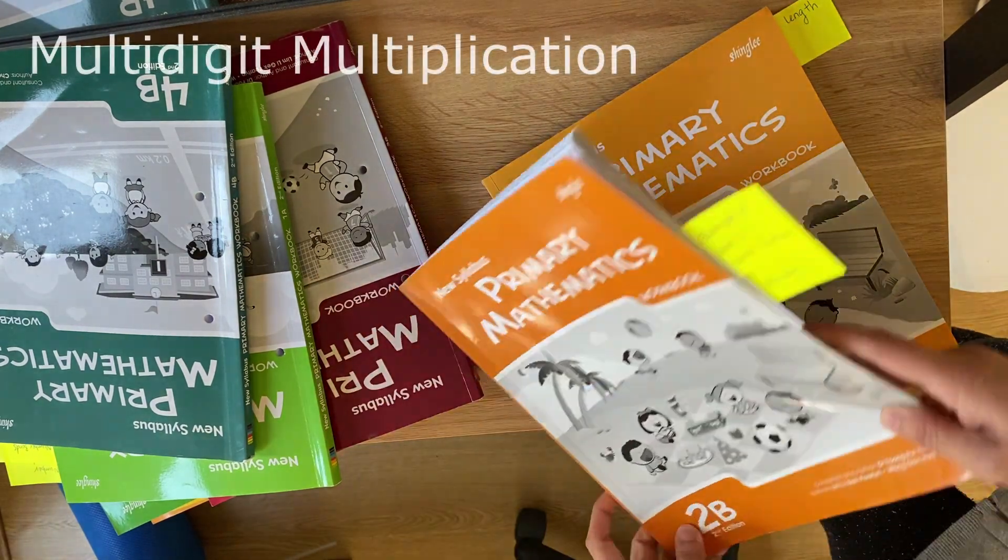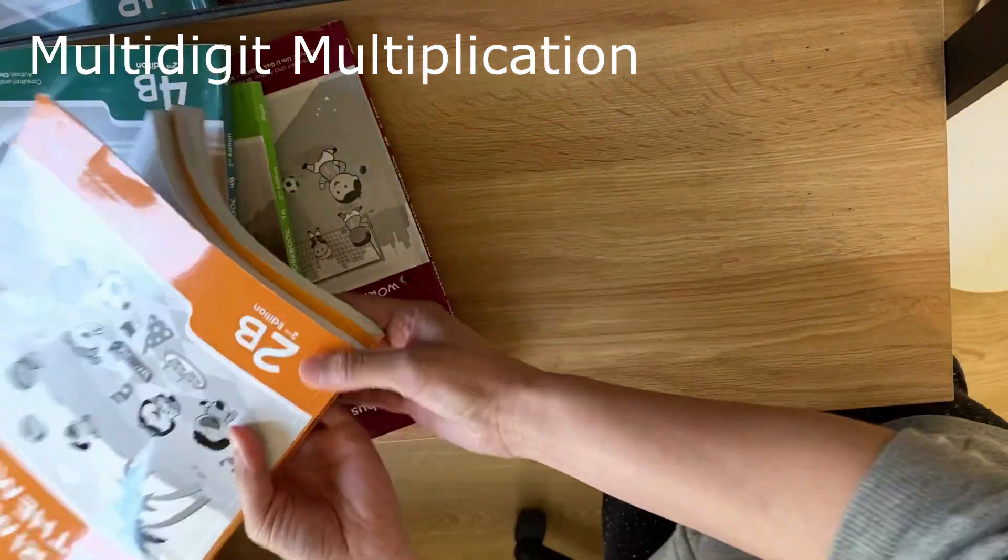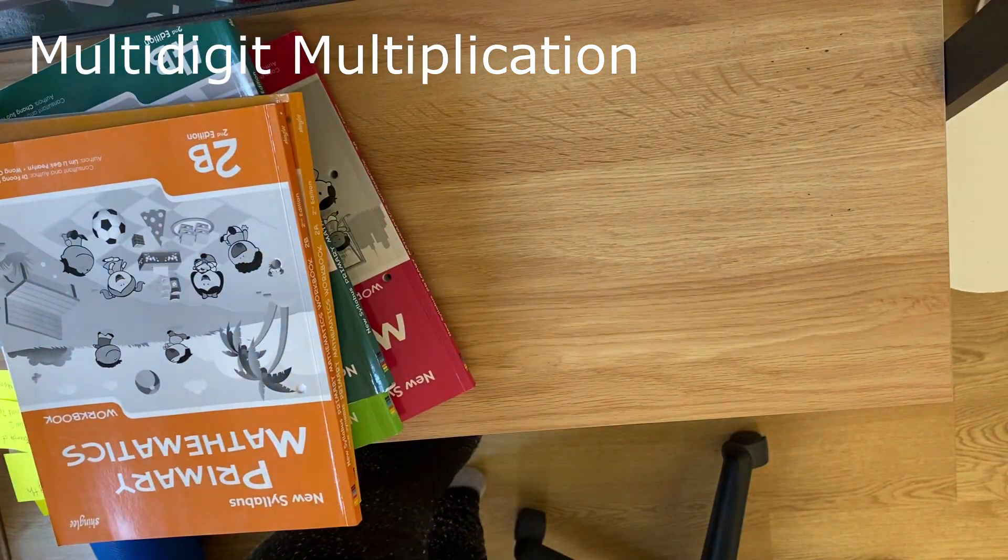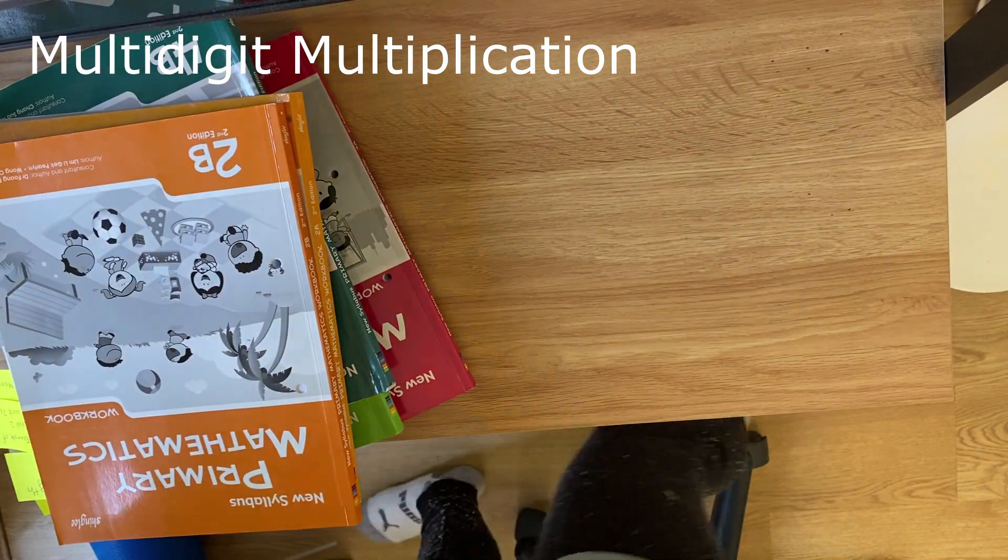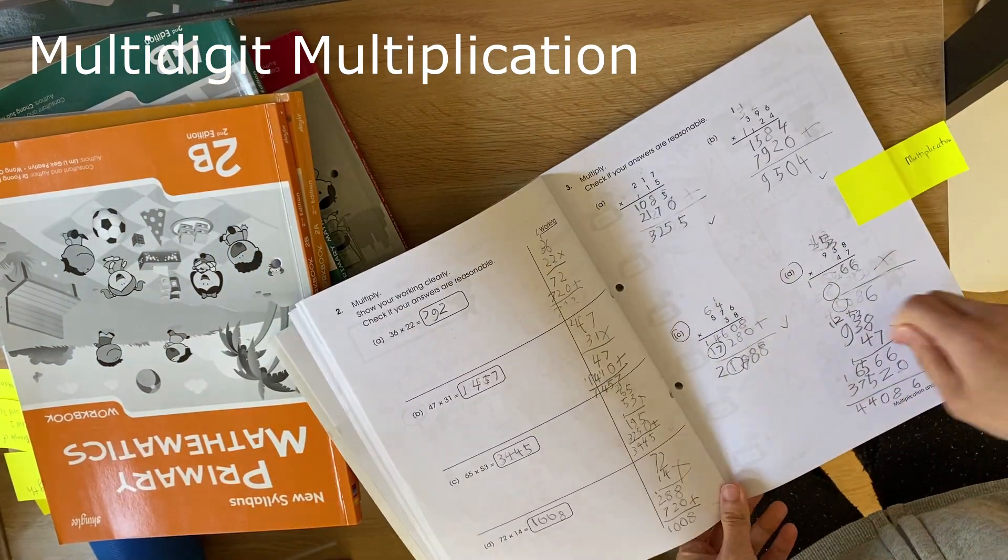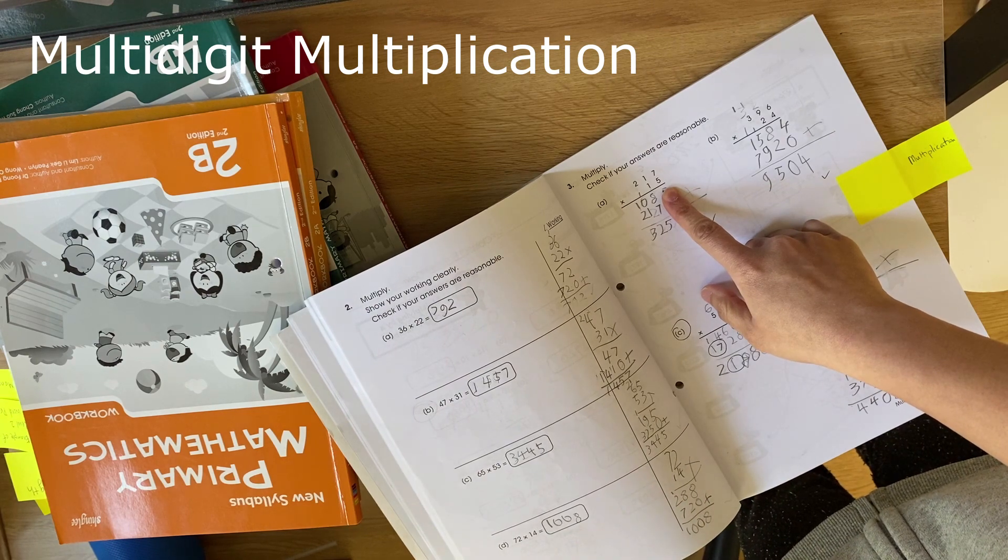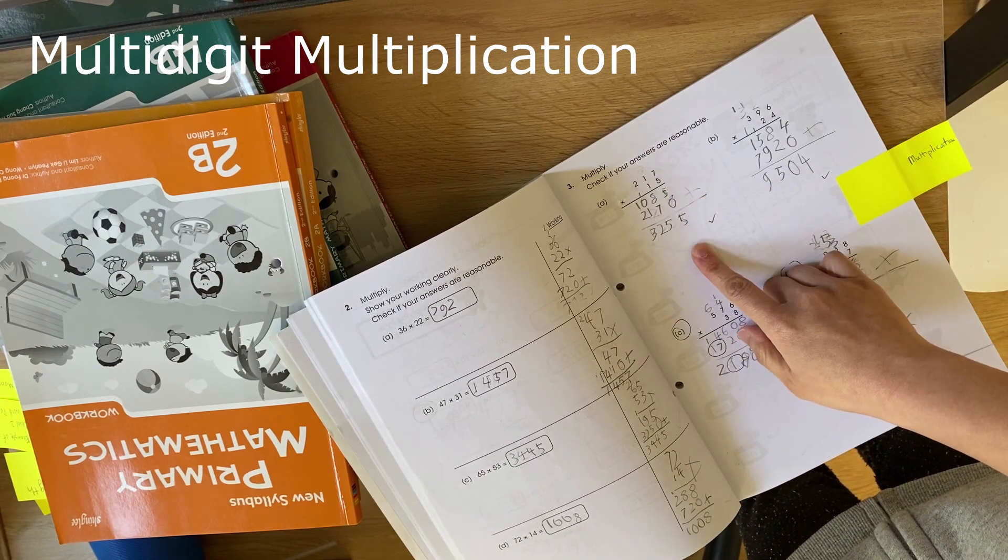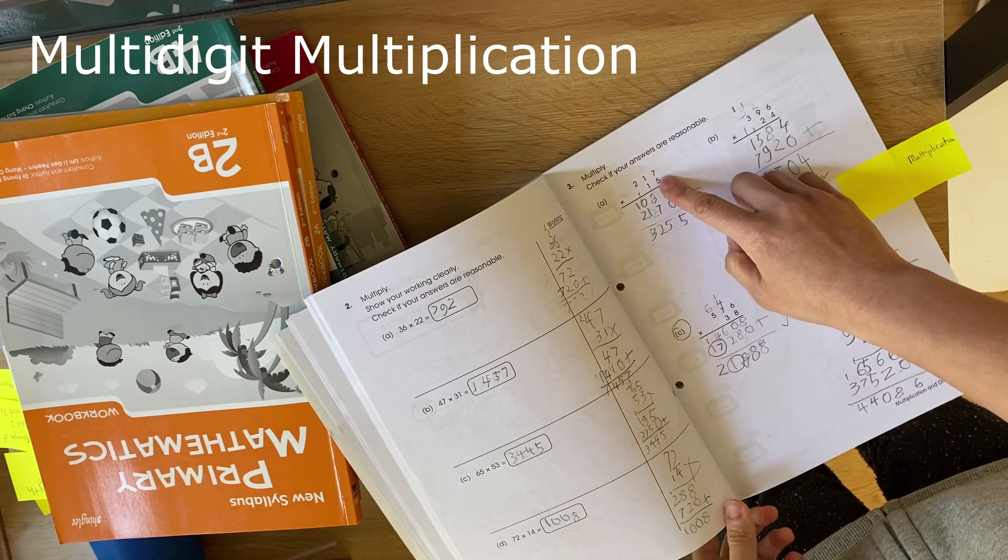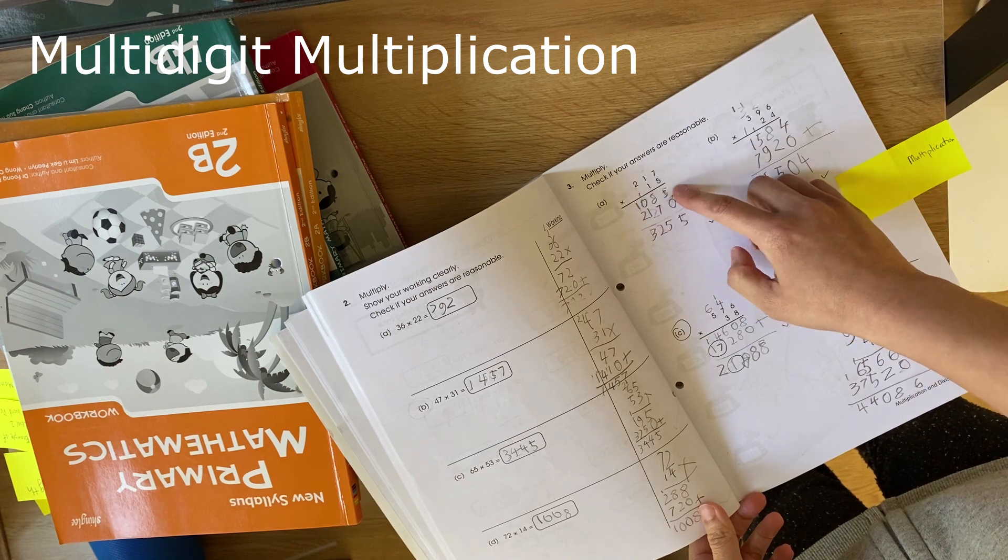Another thing to note is the multi-digit multiplication method that they use. You'll notice here that the method they teach, and they only teach one method in this curriculum, is the traditional long multiplication method. So that is you times your ones, you add a zero, and then you do your tens, and then you add them together.